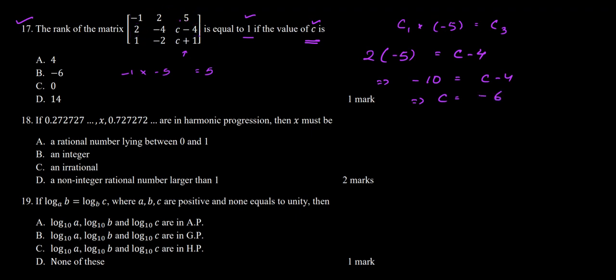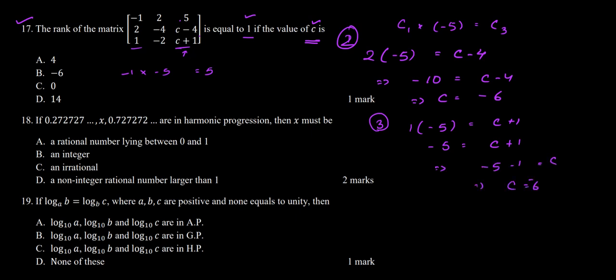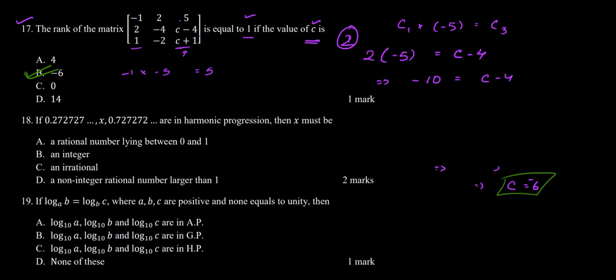We can verify this value of C for row 3: multiplying column 1 by minus 5, we get 1 times minus 5 equals C plus 1, so minus 5 equals C plus 1, giving C equals minus 6. This confirms our answer. The value of C is minus 6, which corresponds to option B — the correct answer to question number 17.